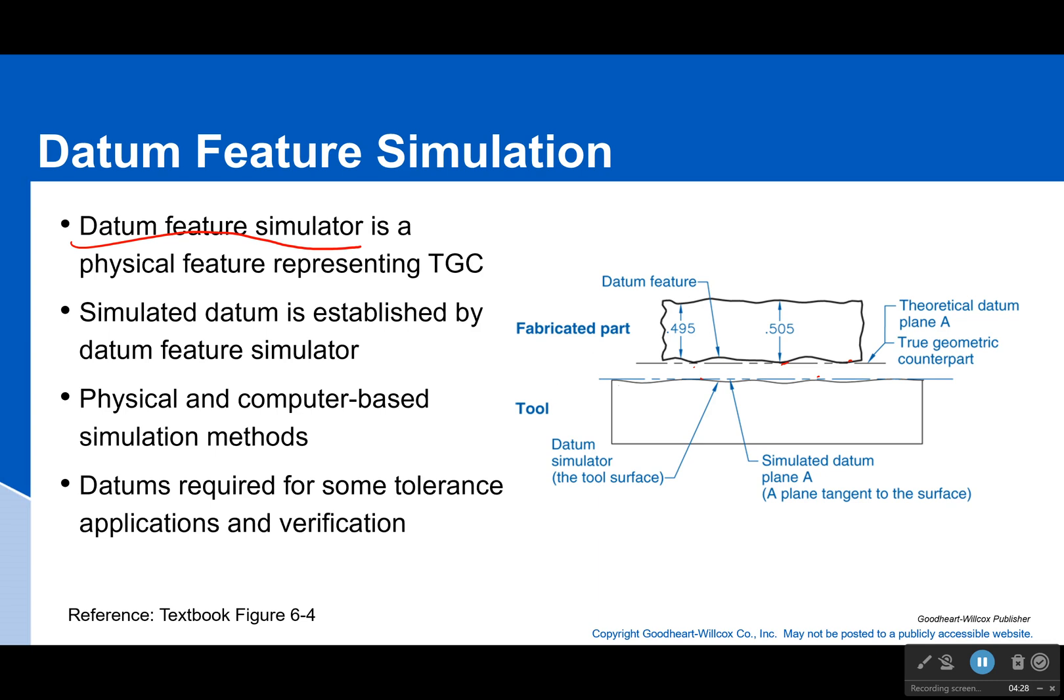Now this tool surface, if you're going to use it as a datum feature simulator—so you are simulating something perfect with something imperfect—it better have very, very small tolerances, which means that it can't have more zigzags than your part. Otherwise, you're not measuring anything; the errors are going to add up. However, in this class, we're not going to really worry about those errors. We're going to just assume that our datum feature simulators are perfect for most things.